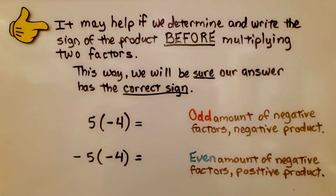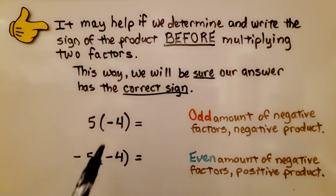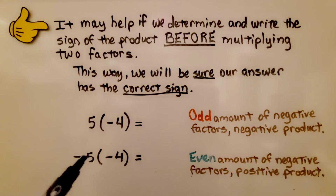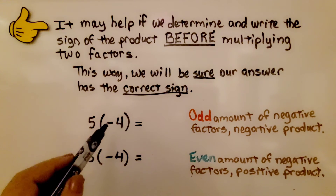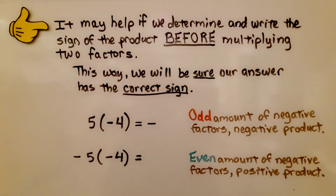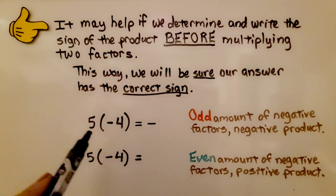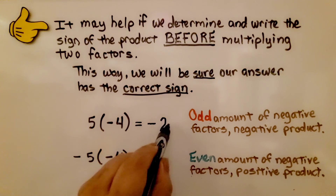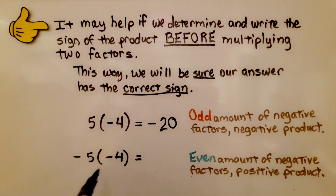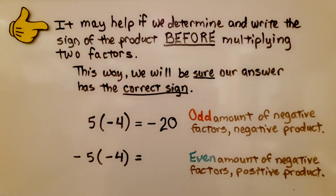It may help to determine and write the sign of the product before multiplying, to ensure the correct sign. With one negative factor — an odd amount — our product will be negative: 5 times 4 is 20, so the answer is negative 20. With two negative factors — an even amount — our product will be positive: 5 times 4 is 20, so the answer is positive 20.